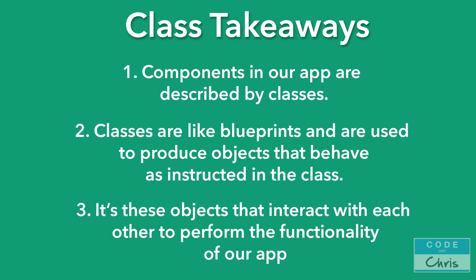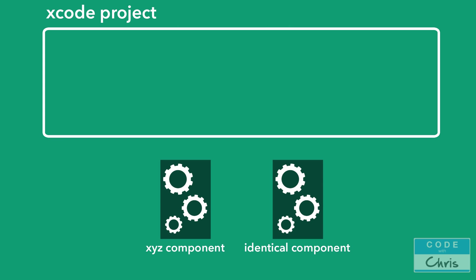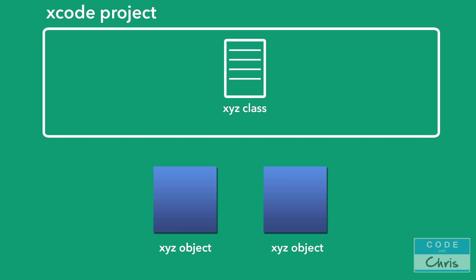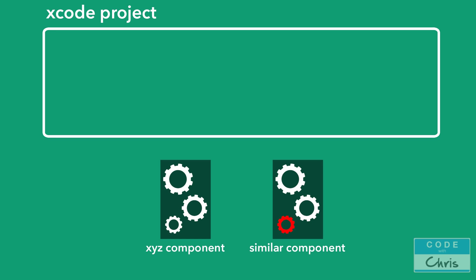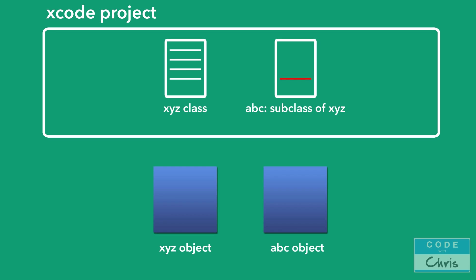In the last lesson we learned about classes and how you can create a class to describe a component in your app. We also said that you can create multiple objects from one class, and that's really convenient because let's say we have two identical components in our app — we can write a single class and create two objects from it. But consider this scenario: what if you need two components that are not identical but very similar, say 90% similar in their behavior. You could write two separate classes, but that's a waste of effort and generally a bad programming practice to have duplicate code everywhere because it makes code maintenance and debugging harder. This is where subclassing comes in — it allows us to handle a scenario like this without having to duplicate 90% of that code.